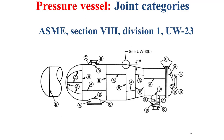Category B includes circumferential welded joints within the main shell, within nozzles, and within communicating chambers. Category B also includes circumferential welded joints between the transition in diameter and the cylinders of the pressure vessel at either the small or large end. Category B additionally includes the circumferential weld joint connecting a non-hemispherical formed head to other components of the pressure vessel such as the main shell.